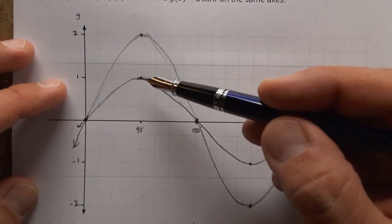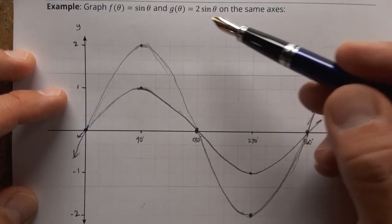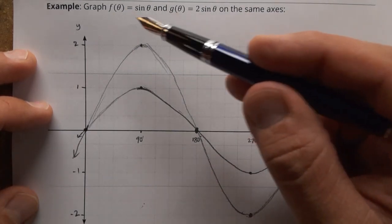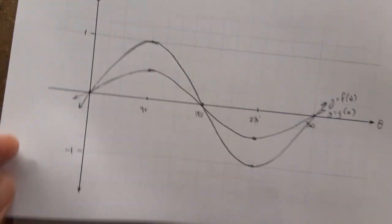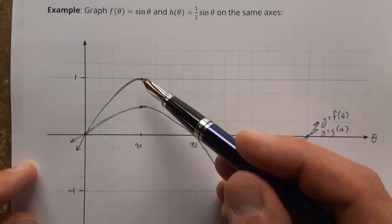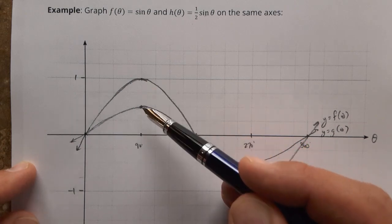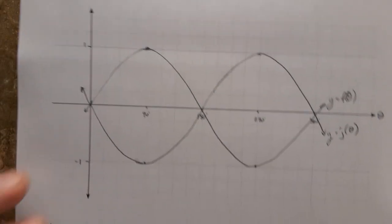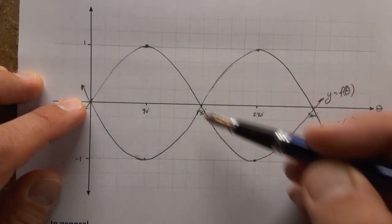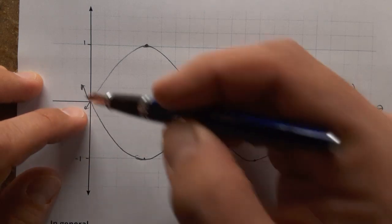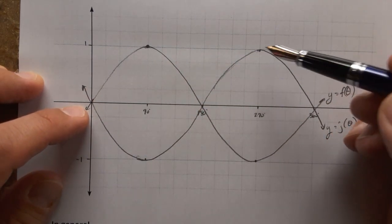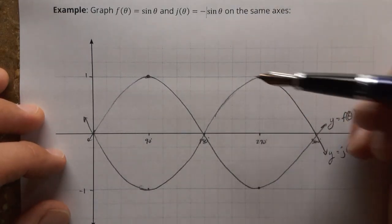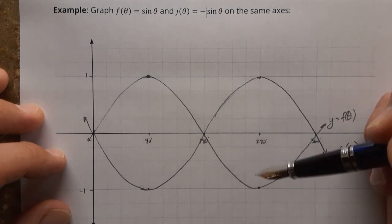Here our original amplitude is 1 because this was sine theta. When we multiplied by 2 we ended up going up to 2 and down to negative 2. That is an amplitude of 2. So our original amplitude 1 was multiplied by 2. On this function our original amplitude was 1 multiplied by a half and so the amplitude is now 1 half. On this function our amplitude was 1 we went up to 1 and down to negative 1. On the new reflected one we went down to 1 and up to positive 1. This actually didn't change the amplitude.